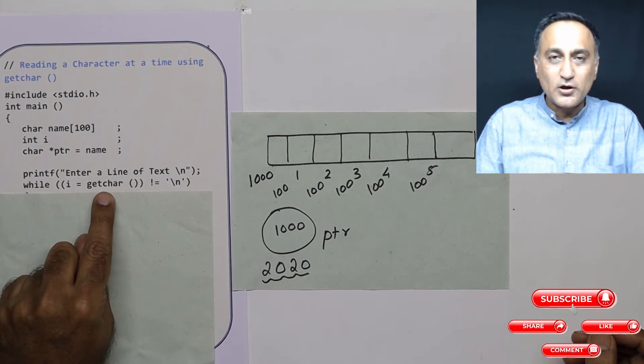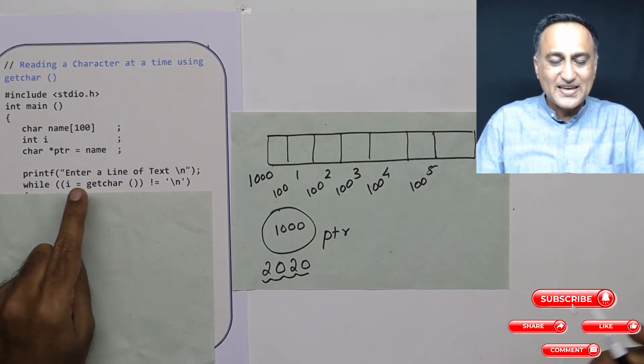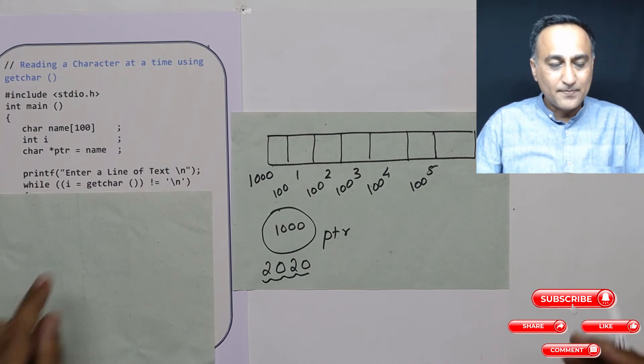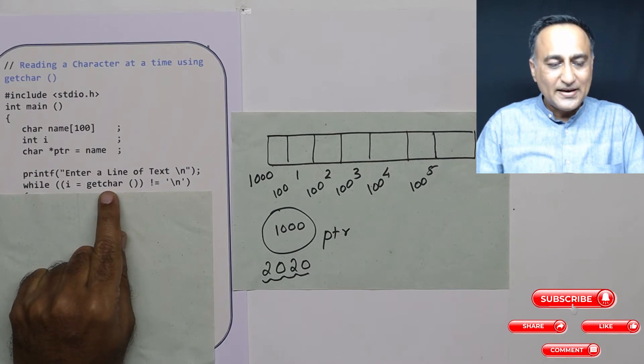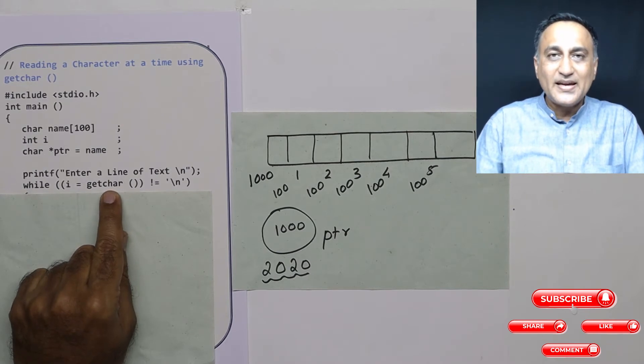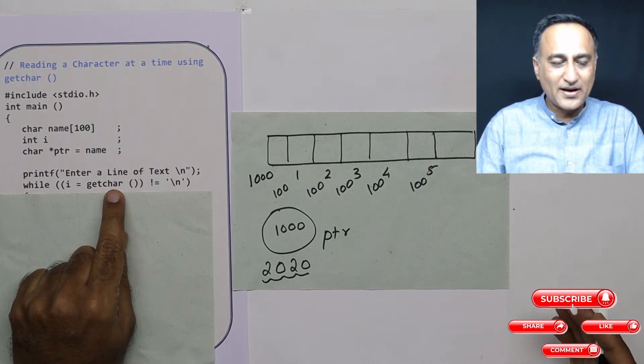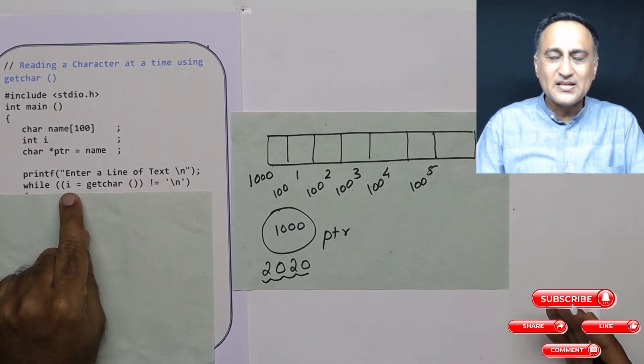So first we will have a call to getchar. Let's say I enter capital A. The prototype of getchar indicates that it returns an integer type of data. If I enter capital A, the ASCII value of capital A is 65. So 65 is going to be returned by getchar, and I is going to be 65.